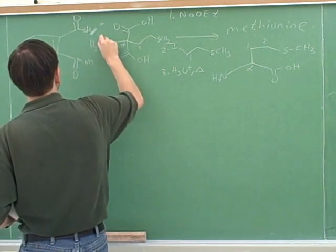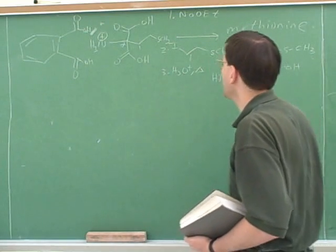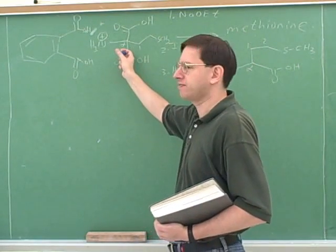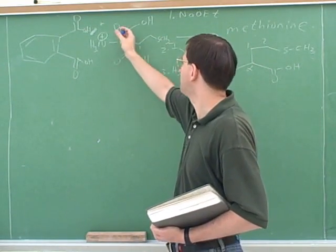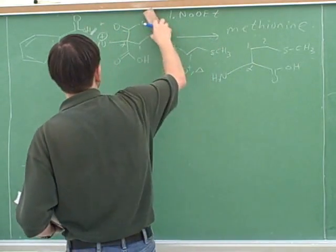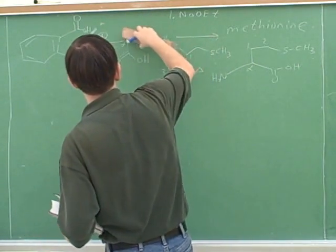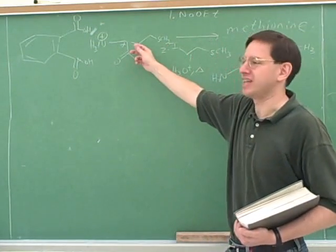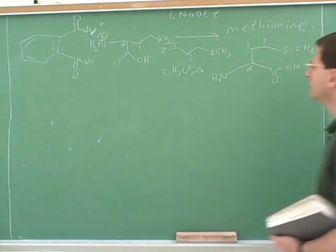I would expect the amine here to be in its positive form. Is this a good candidate for decarboxylation? Yes, because it's a beta-carbonyl carboxyl group. So we're going to lose one of the carboxy groups. And what do you know — that's methionine right here. Very good.